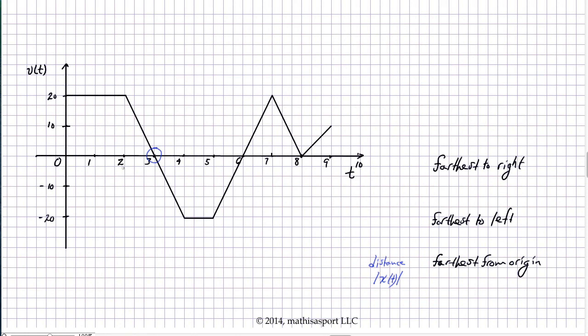Now, if I'm looking for farthest to the left, a similar argument applies. Wherever I am here, I am farther to the left as I move here, because I'm adding negative signed area. Adding negative signed area means I'm moving to the left. So, farthest to the left can't occur anywhere between three and six, because I keep moving farther and farther to the left. So, the next place to consider is here.